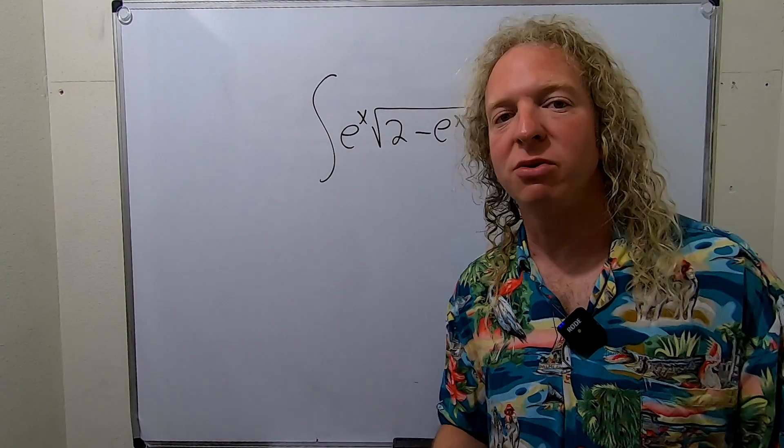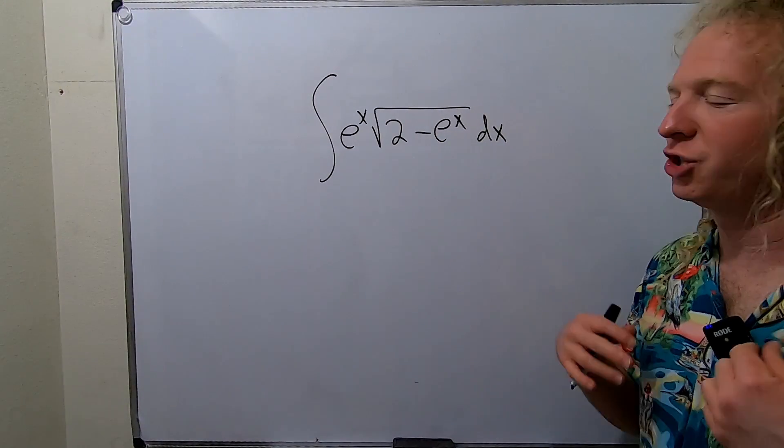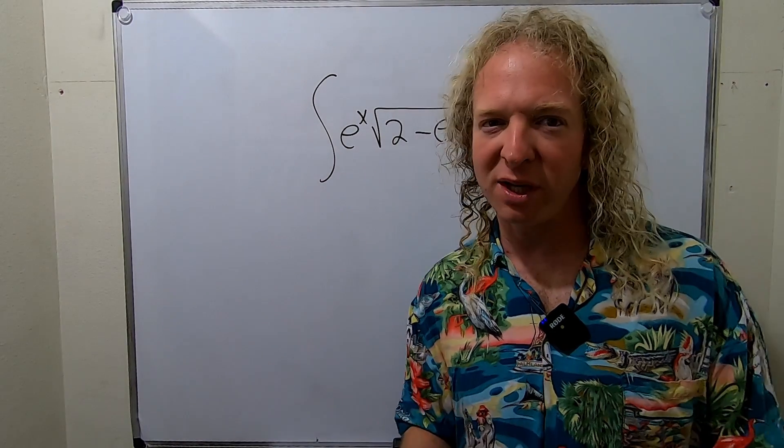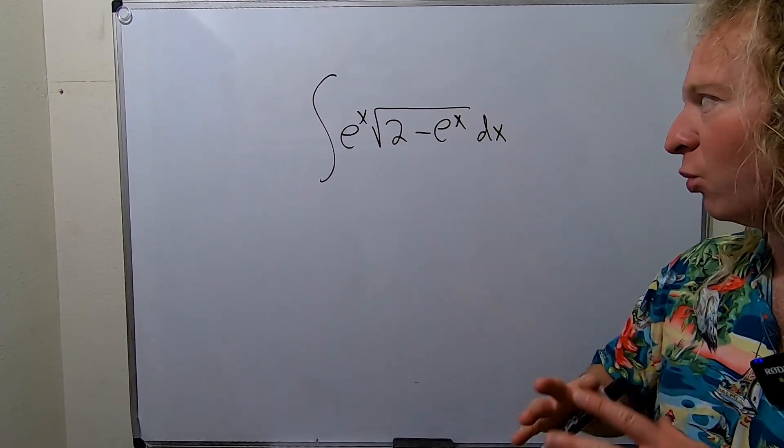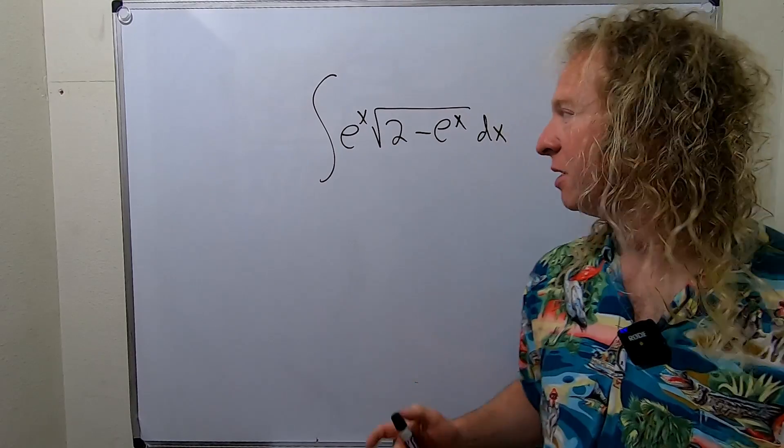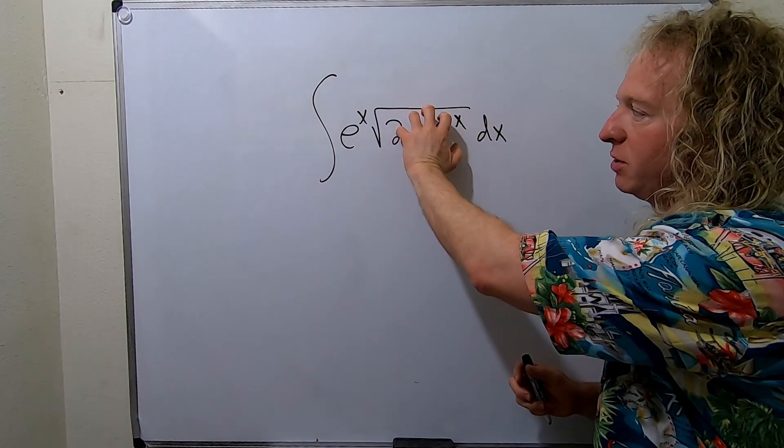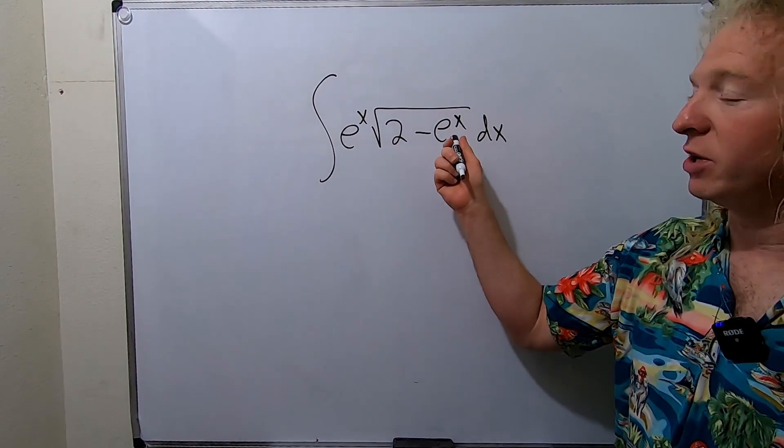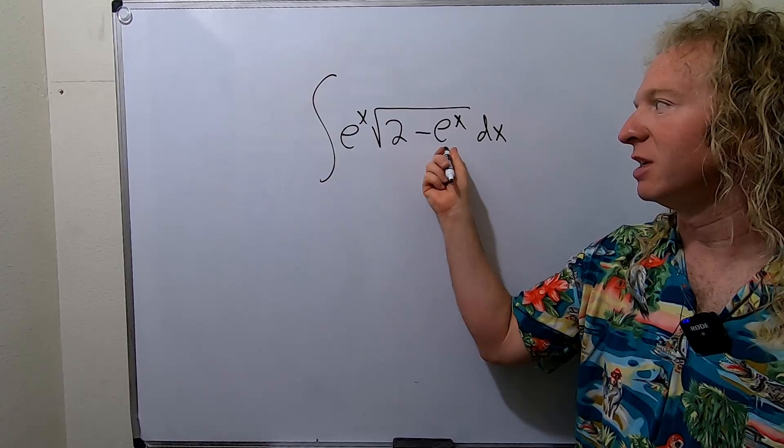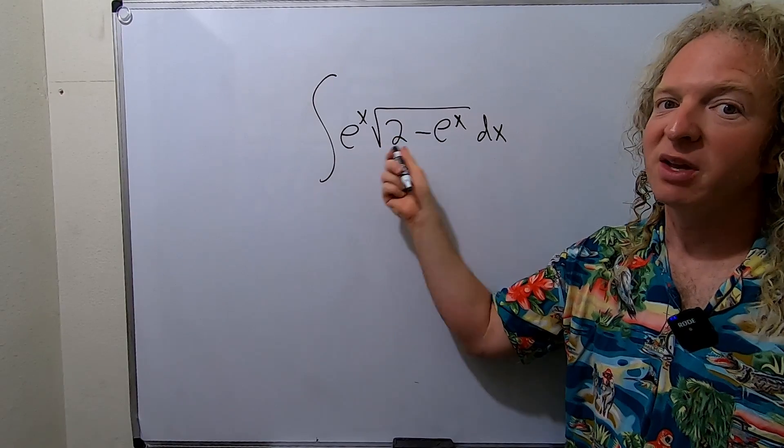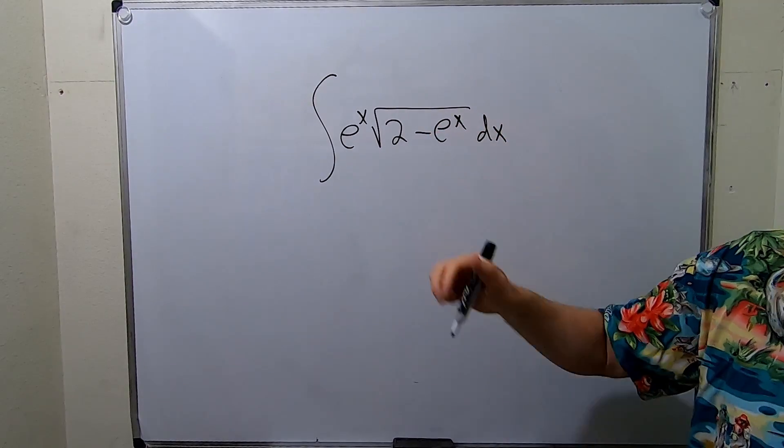So we're going to make a u substitution and a general rule that usually works is whenever you're making a u substitution you want to let u be your inside piece. So in this case our inside piece is going to be 2 minus e to the x. We know that when we take the derivative of the inside we're going to get e to the x. So it's a good first attempt. So let's try it.